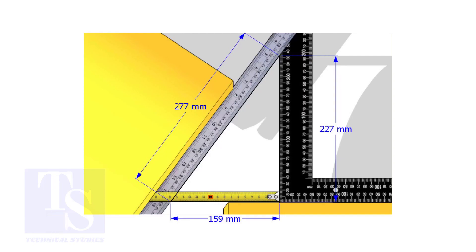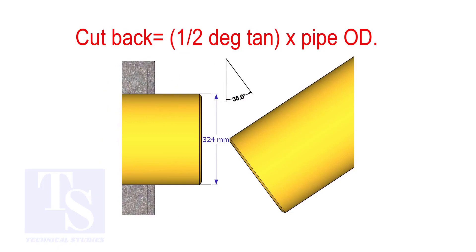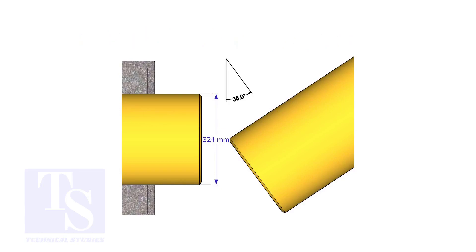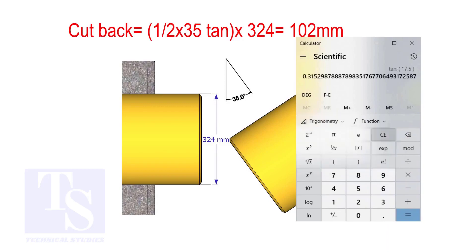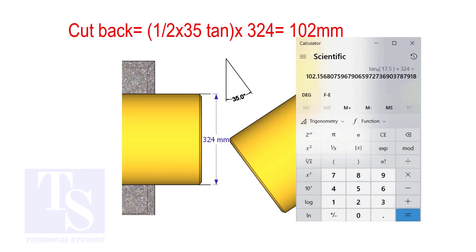How to calculate the cutback of a single cut miter. When it is a single cut, the cutback is half degree tan, multiplied by the OD of the pipe. The answer is 102 millimeters.